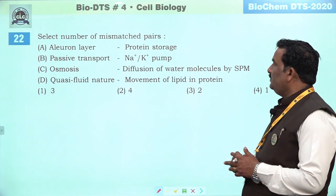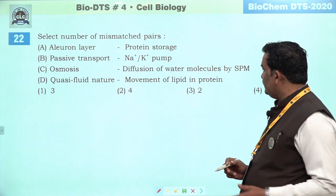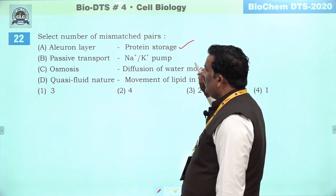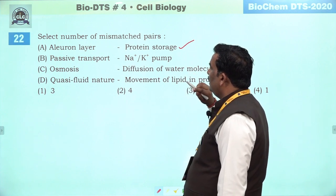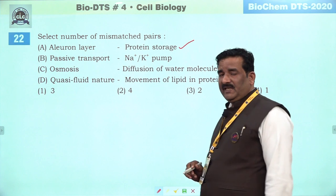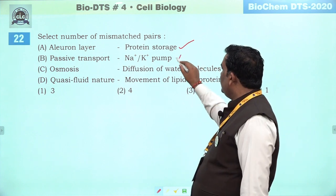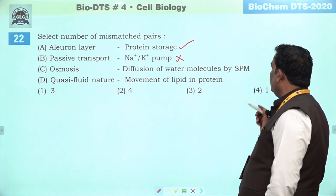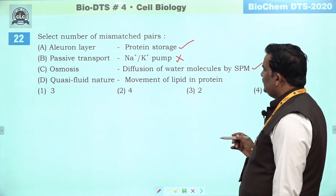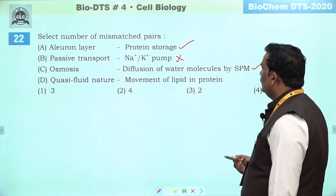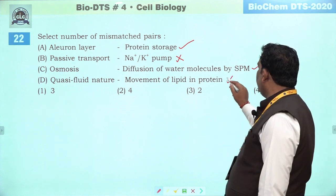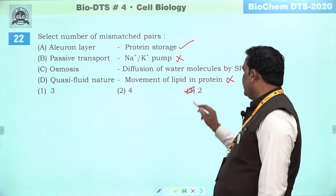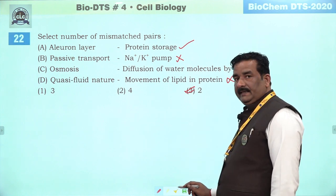Next question: select number of mismatched pairs. Aleurone layer ka connection protein storage se hai — yeh sahi hai. Passive transport ka connection sodium-potassium pump se nahi hai — yeh active se hai, iska matlab hai yeh galat ban raha hai. Osmosis is a diffusion of water molecule through a semi-permeable membrane — this is right. Quasi nature movement of lipid in protein — yeh bhi galat ho raha hai. Toh iska matlab hai hum mismatched ko select karna hai: 2 hain. Third option humare liye better hai.